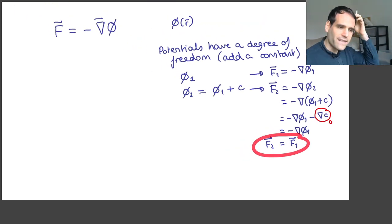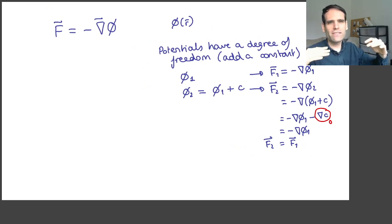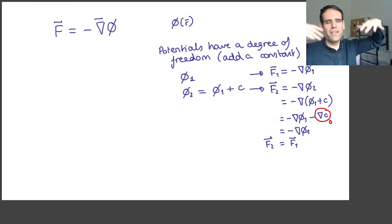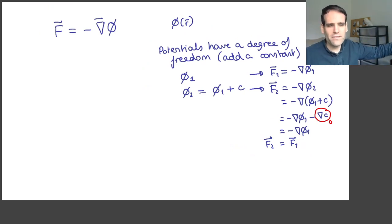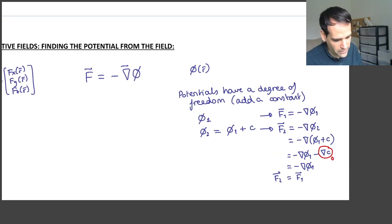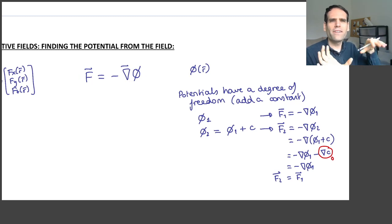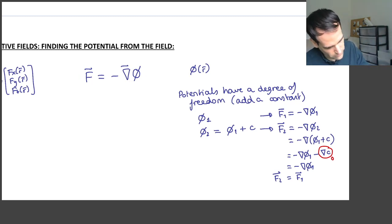This is related to the fact that, for example, with potential energy, you can always define what zero means. You can always add a constant to the potential energy everywhere in the universe and the physical results remain the same — the gravitational fields and gravitational forces will always be the same. So the potential has this degree of freedom of adding or subtracting a constant. This means that whenever we try to find the potential from a field, we will always be able to add an unknown constant.